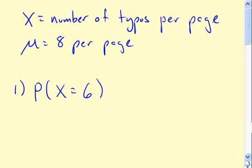In this problem, we have a hypothetical statistics textbook manuscript and are told that the number of typos per page has a Poisson distribution with a mean of 8 per page. And we're then asked a series of questions about various probabilities related to this scenario. So the first is, what's the probability that a randomly selected page has 6 typos? So we're going to let x here denote the number of typos on a randomly selected page, and mu is the mean of x, which is 8 per page.